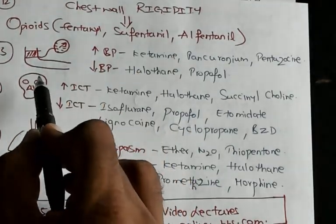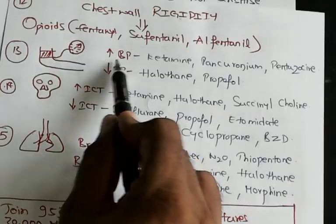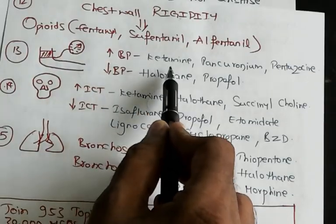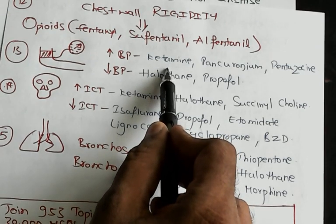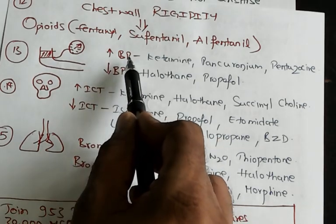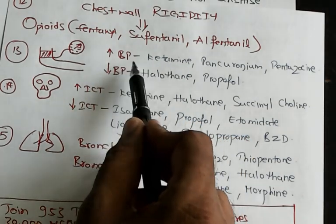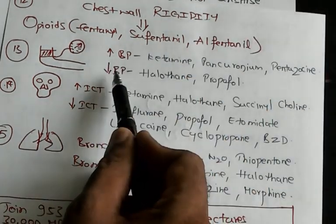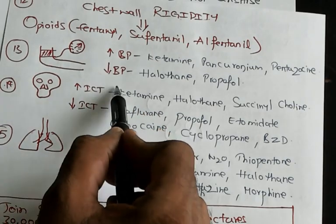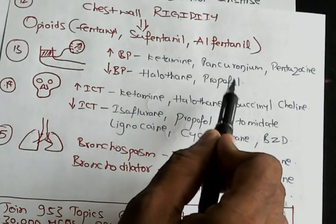Now blood pressure effects: increased BP is caused by ketamine — ketamine is like a kite that flies high, so BP increases with ketamine. Pancuronium and pentazocine also lead to increased BP. Decreased BP is the feature of halothane and propofol. There is no other way — you have to memorize all these facts to get 10 out of 10 in anesthesia.